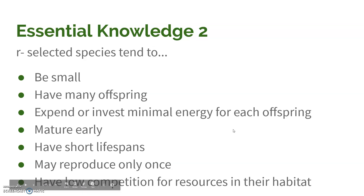R-selected species, on the other hand, are very small. They have a lot of offspring. They don't invest a lot of energy into each of those offspring. The offspring themselves are very small and mature really quickly. So they reach sexual maturity, maybe reproduce only once, and they just have lots and lots of babies, and that's it.